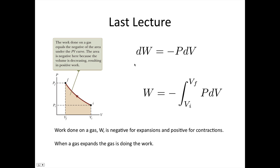A quick recap of the ideas from the last lecture. We saw that for a gas, dW is equal to minus p dV. This is the differential form of the work equation. We can integrate it, and we see that work is negative the area under the curve on the PV graph.